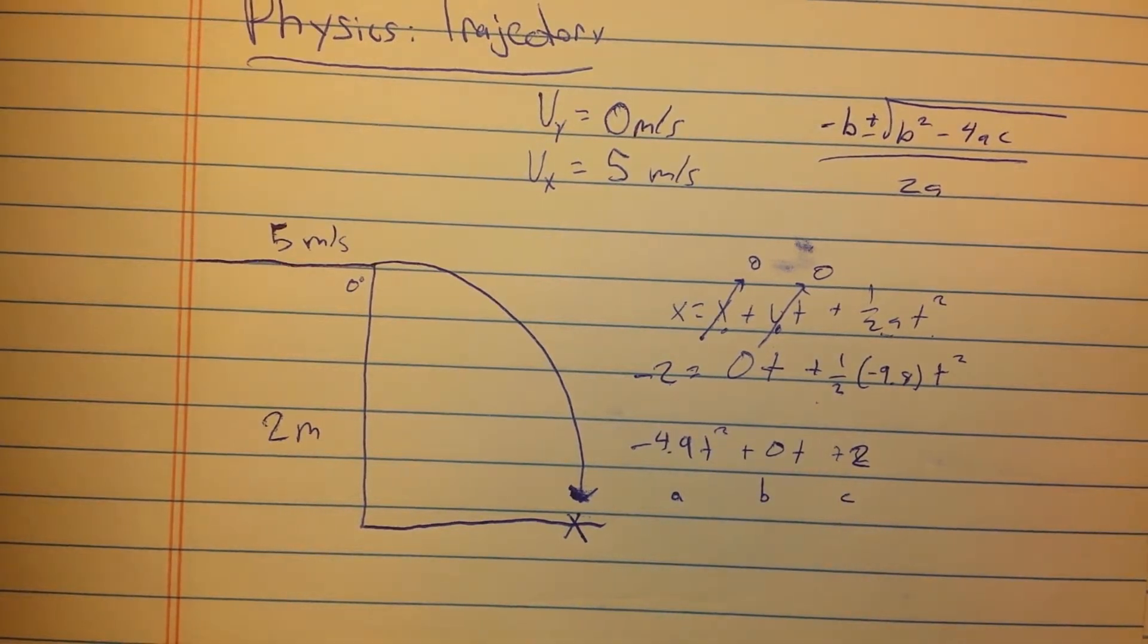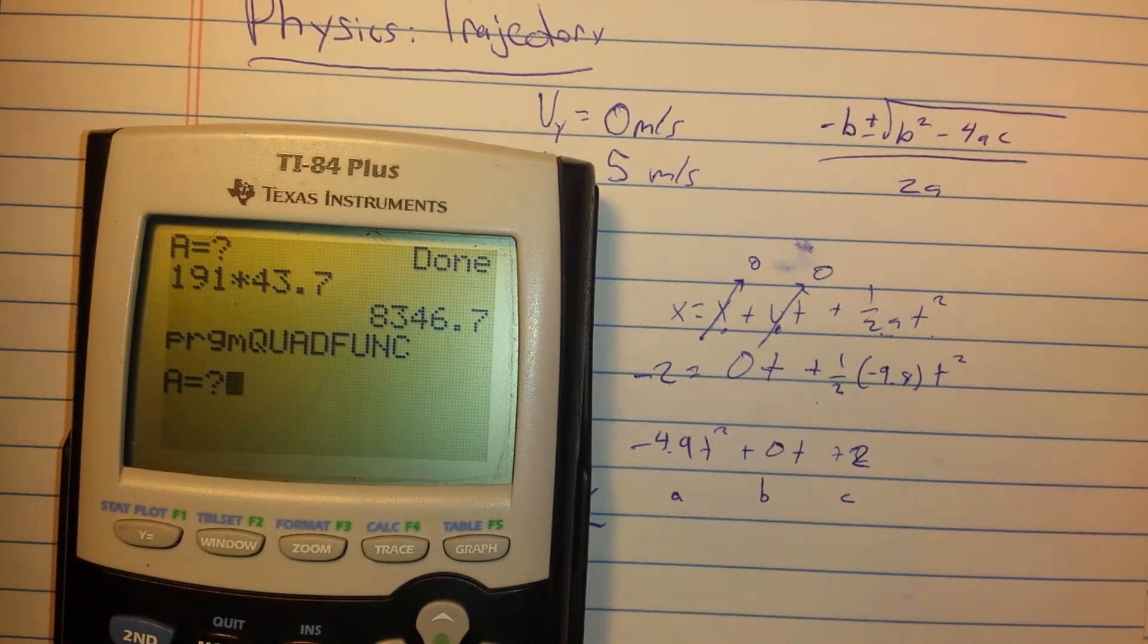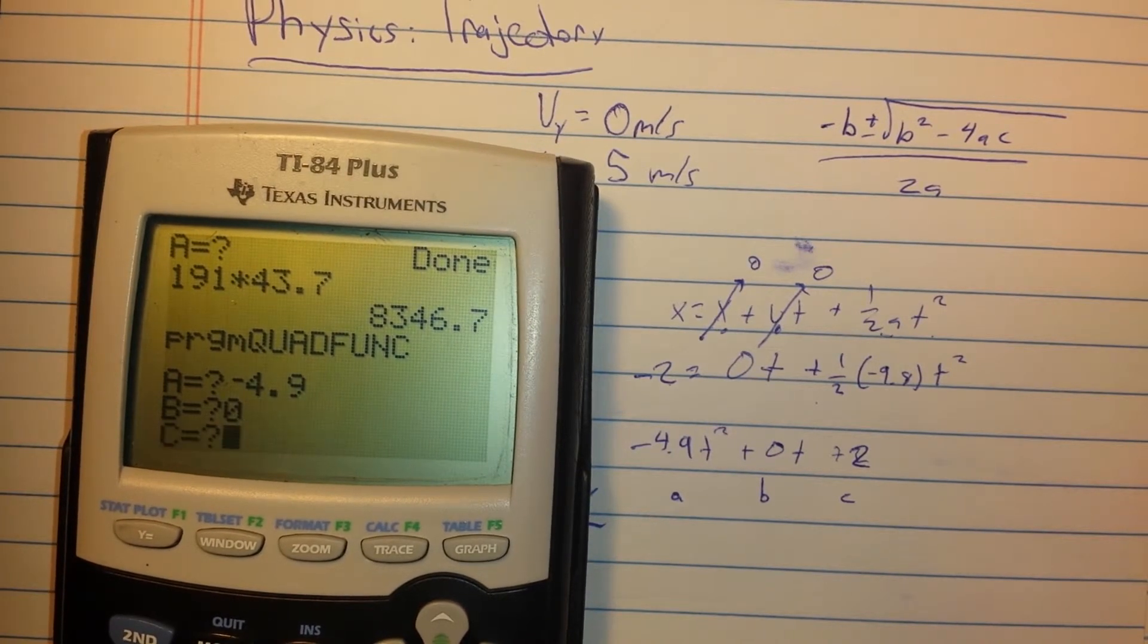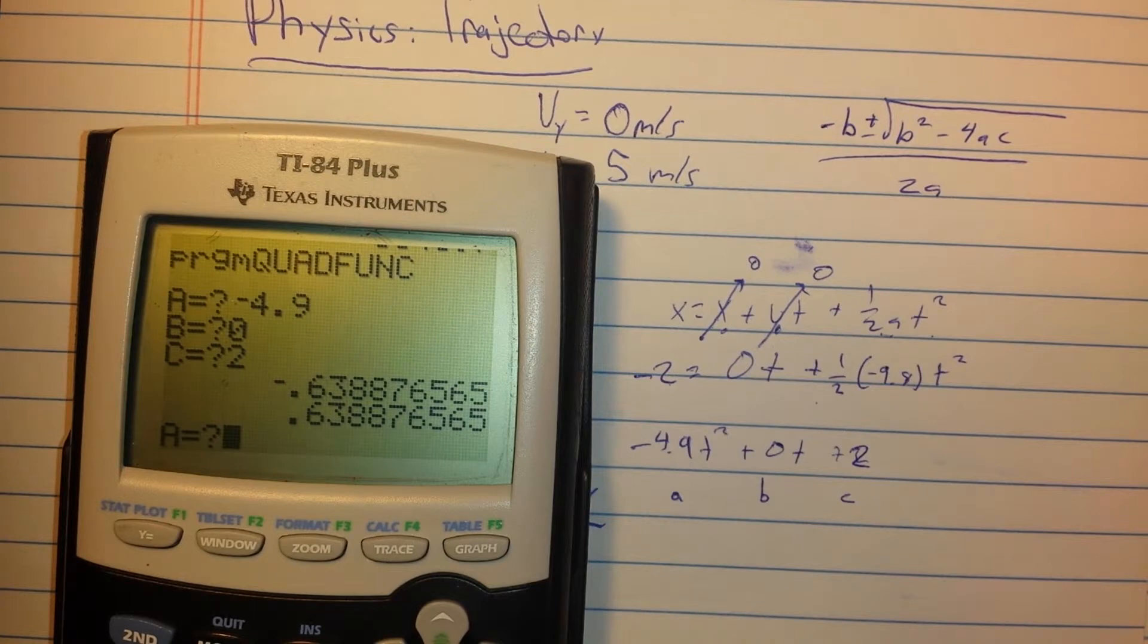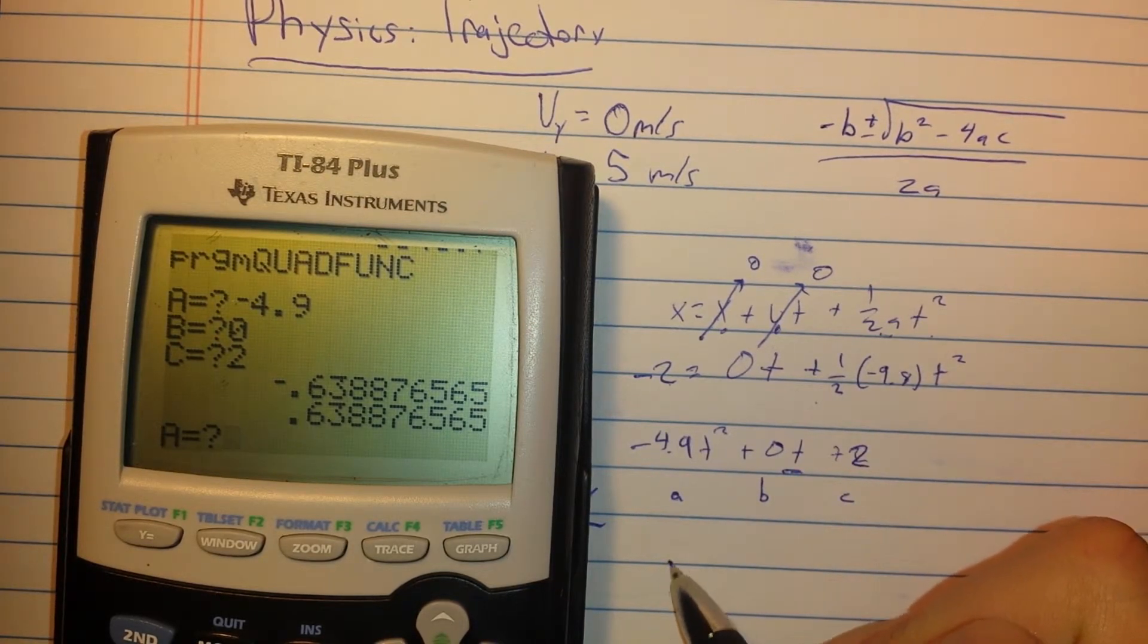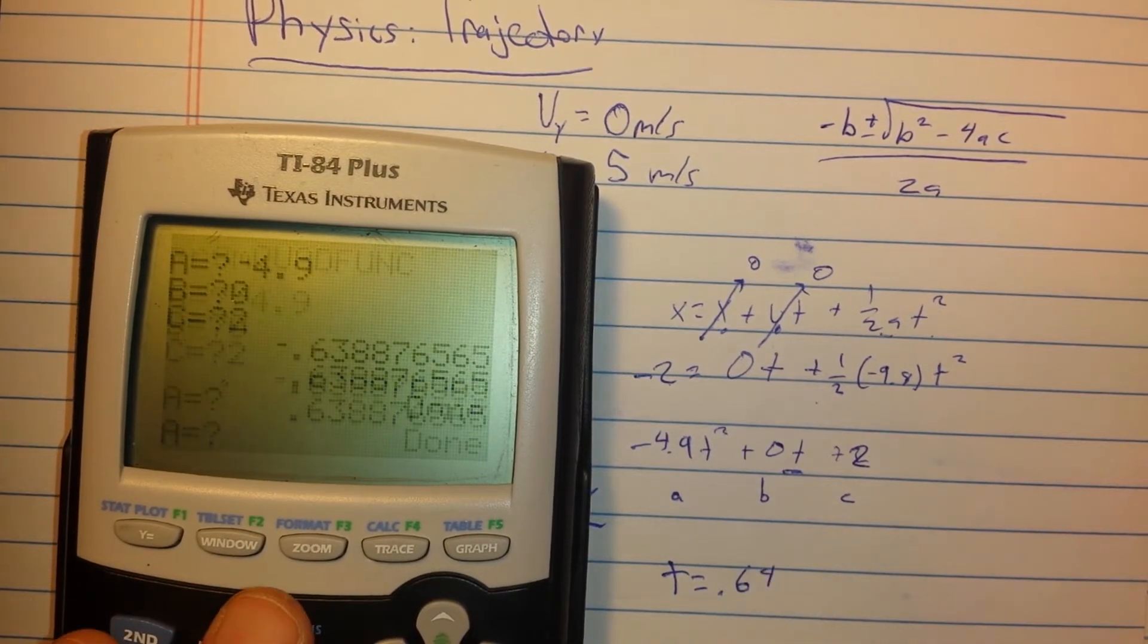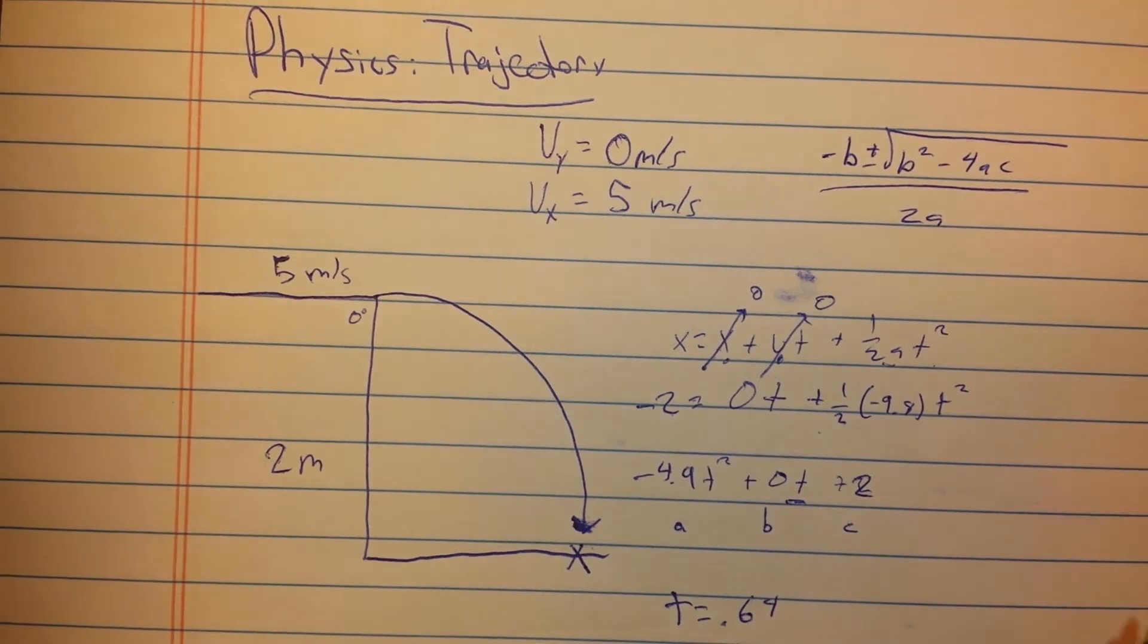Now we're going to set this up, I'm going to use a program in my calculator, because I'm lazy and don't want to make this long, so A is negative 4.9, B is zero, and our C is two. So our time, which we're looking for is, because we have our T here, it's going to solve for T, our time is 0.64. Okay, so we've got that now, our time is 0.64.